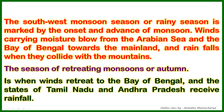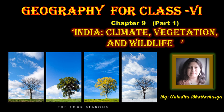The season of retreating monsoon, or autumn, is when the winds retreat from the mainland back to the sea and water bodies. During this time, Tamil Nadu and Andhra Pradesh receive rainfall. This path of the wind going back is called the retreating monsoon wind.